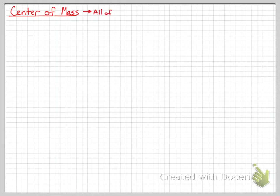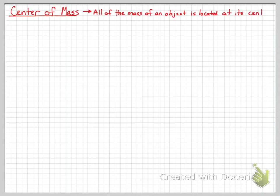As we start momentum, we're going to start with the idea of center of mass. We're going to talk about center of mass of objects and the center of mass of systems. It's a great way to simplify things, to make physics more logical and help us mathematically. What we're saying with center of mass is that all of the mass of an object is located at its center.